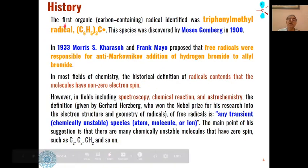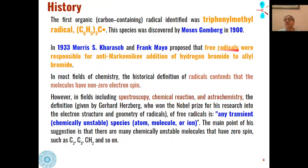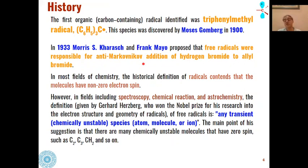The history of free radicals shows that the first organic carbon-containing radical was the triphenylmethyl radical, discovered by Gomberg in the year 1900. Then in 1933, Kharasch and Mayo proposed that radicals were responsible for anti-Markovnikov addition of hydrogen bromide to allyl bromide. This reaction is commonly called the Kharasch effect or peroxide effect, which we have seen at the graduation level.